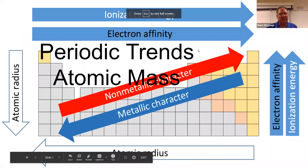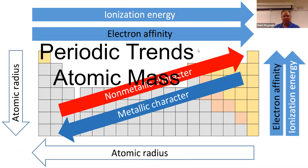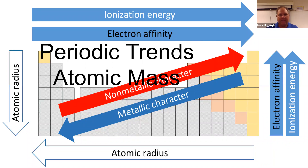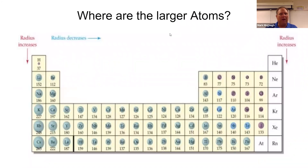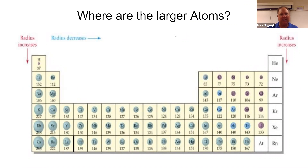Periodic trends and atomic mass — these are the last two things we're going to talk about related to the periodic table, and then we're going to do some reviewing. Where are the larger atoms? We've talked about how atoms aren't all the same size. So what are the trends — where do we find the larger atoms on the periodic table?